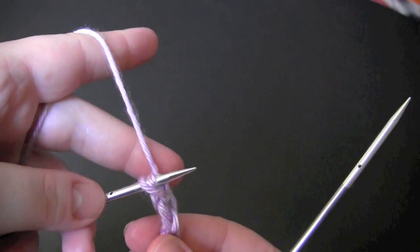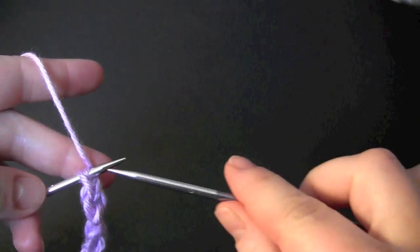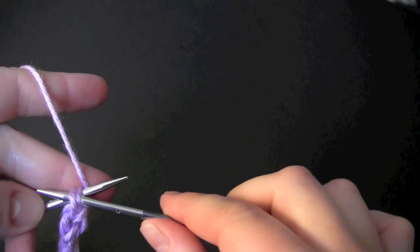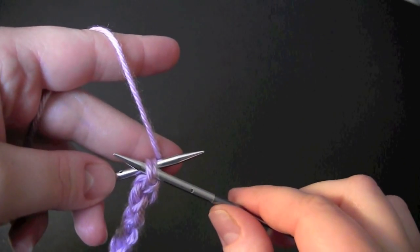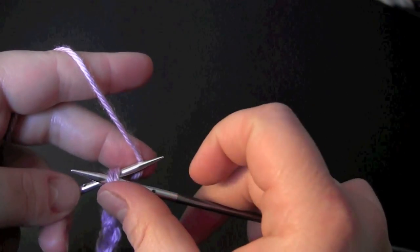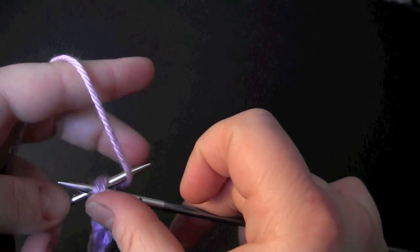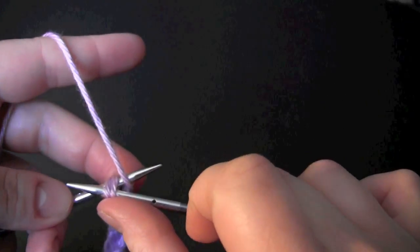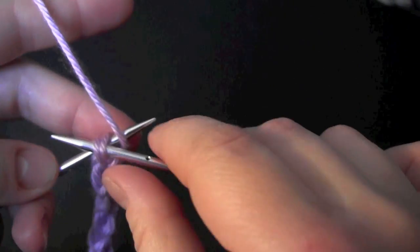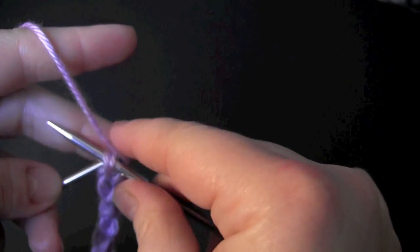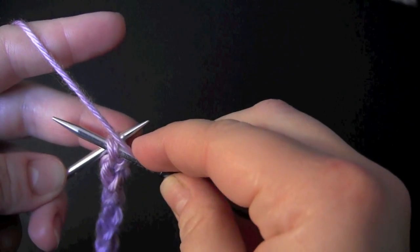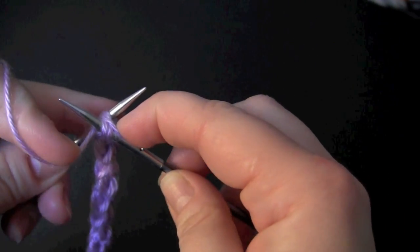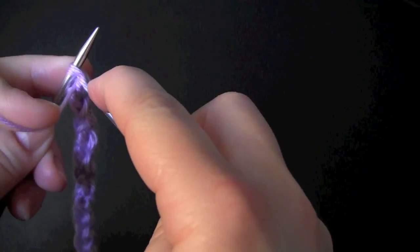So again, you have your yarn in the back of the work. Go into your two stitches to purl. Bring your yarn around to the front, and I'm holding it in place with my right index finger, and then just purl those two stitches together.